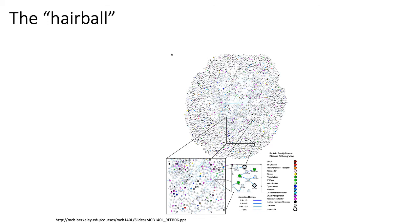Yeast-2 hybrid screens and protein-protein interaction screens in general are famous for generating what's known as hairball diagrams. An example of a yeast-2 hybrid screen in yeast shows that at a very high level, it's very hard to discern anything useful because it essentially looks like a hairball. Later in the lecture, when we talk about the structure of networks and identifying important genes and communities, we'll discuss what to do with these hairballs once you generate them.